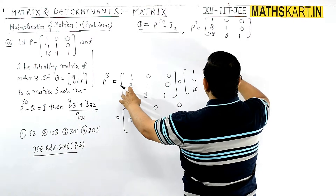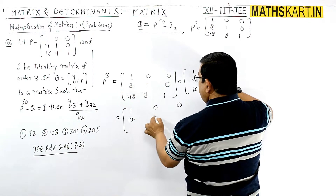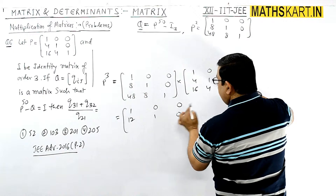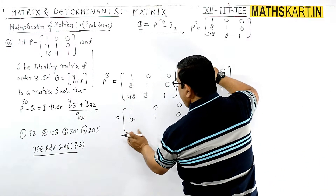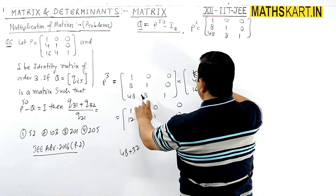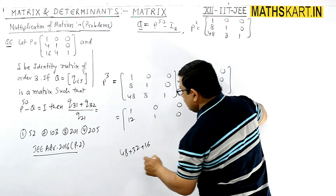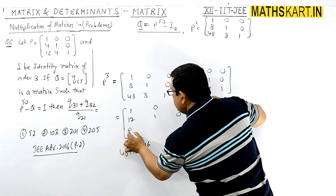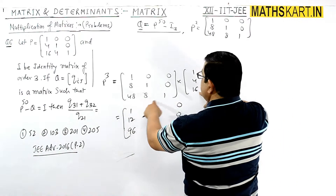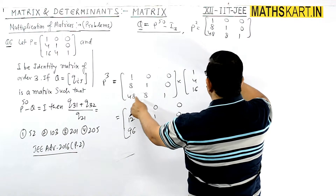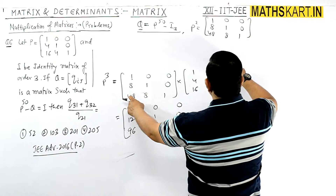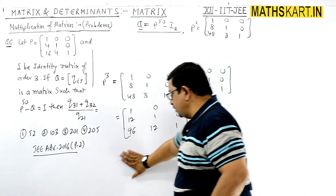For P cubed: the (2,1) position gives 8 plus 4 equals 12, the (2,2) position gives 0 plus 1 equals 1, (2,3) is 0. The (3,1) position: 48 plus 32 plus 16 gives 96. The (3,2) position gives 8 plus 4 equals 12, and (3,3) gives 0 plus 0 plus 1 equals 1. So P cubed is [1 0 0 / 12 1 0 / 96 12 1].